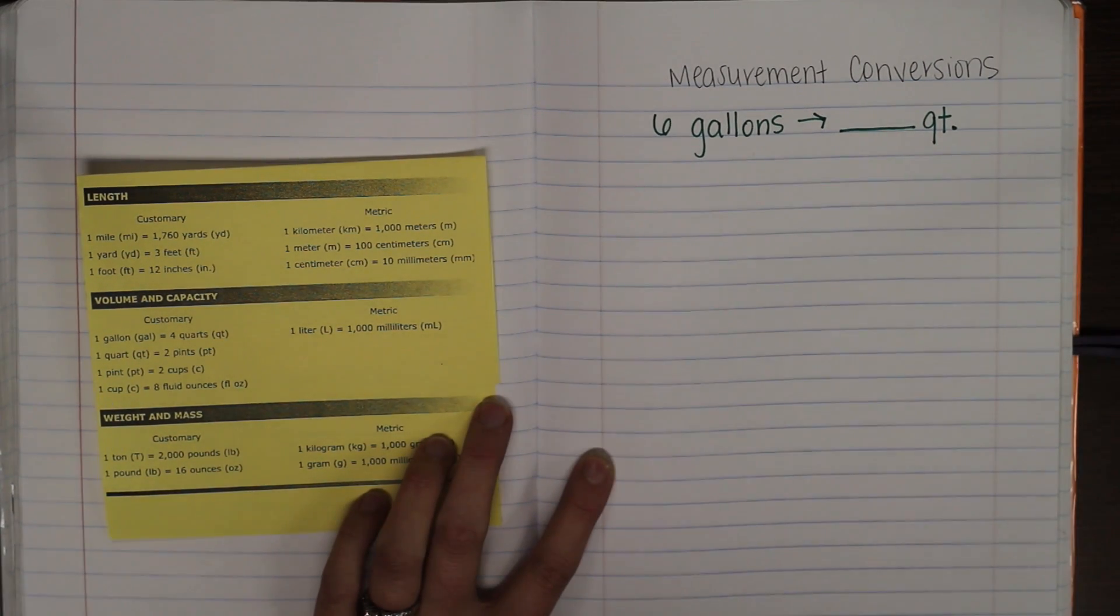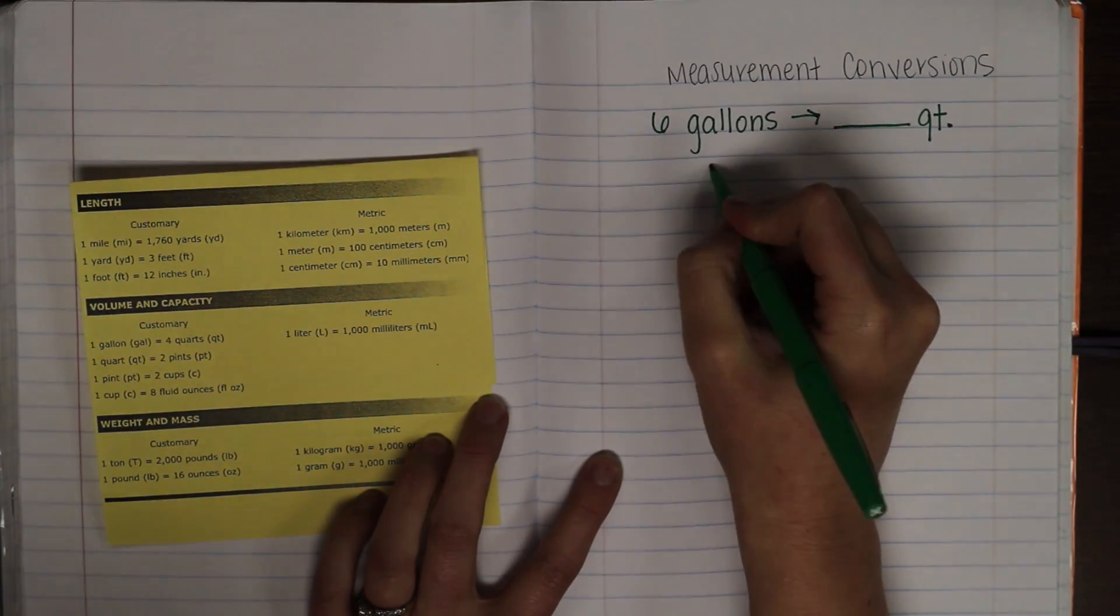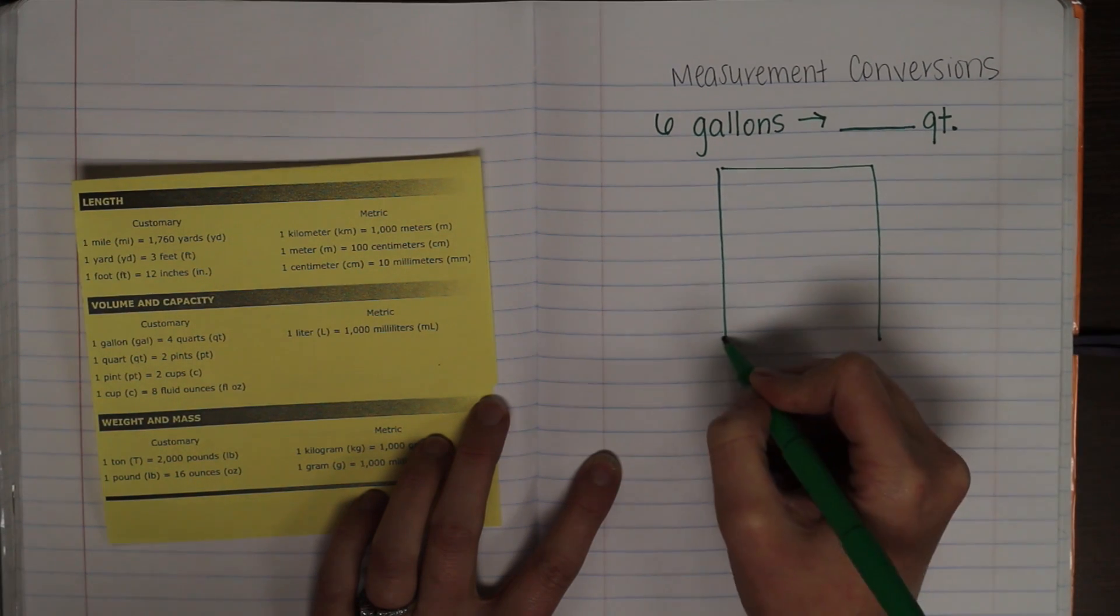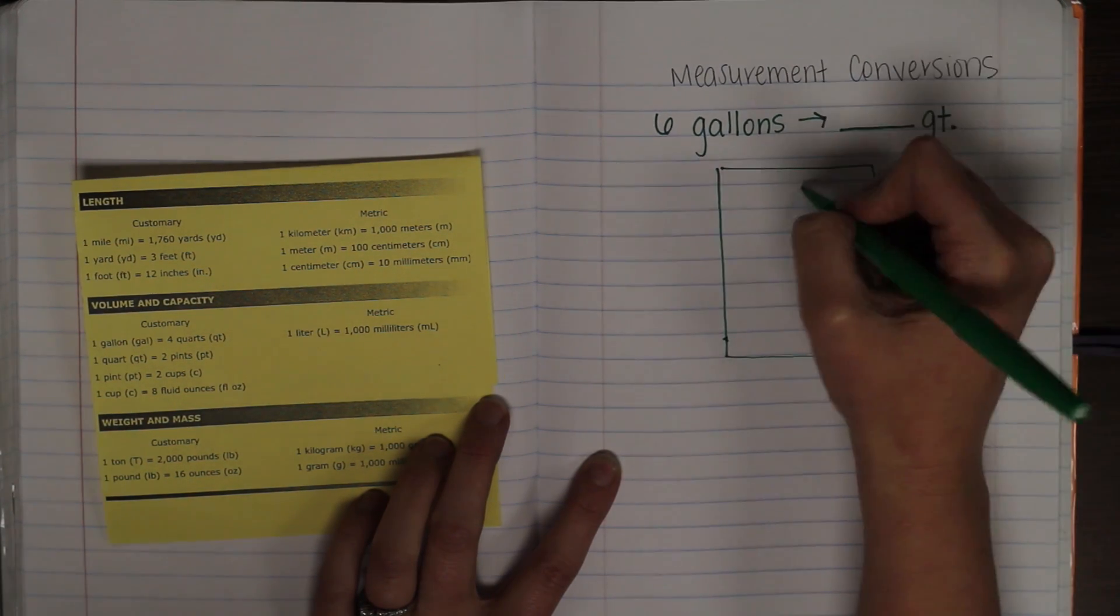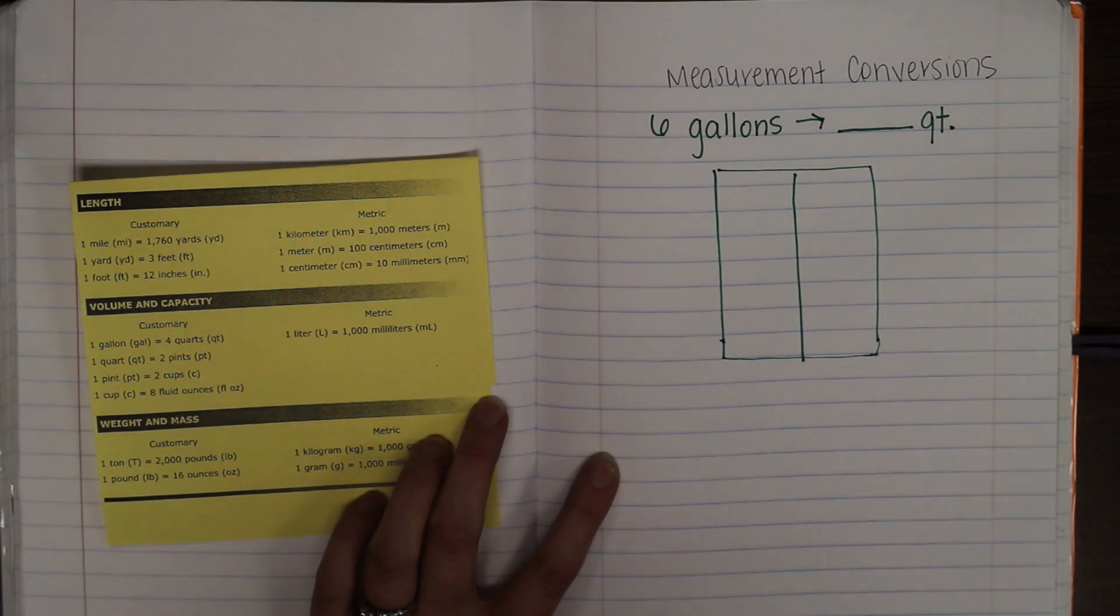We want six of those, and we are changing it into quarts. Now, quarts are smaller than gallons, so that kind of gives you an idea of what your final answer should look like. We're going to start with just setting up a simple table, which is going to look similar to our input-output tables we did during our last unit.